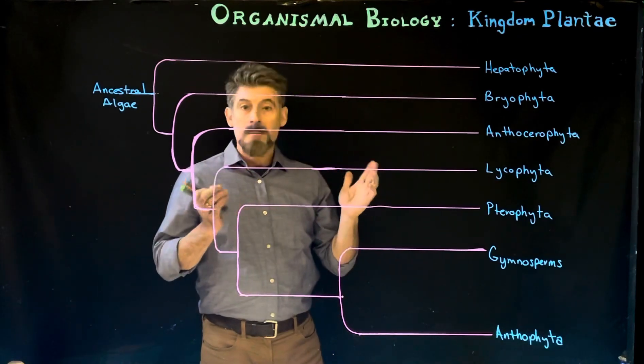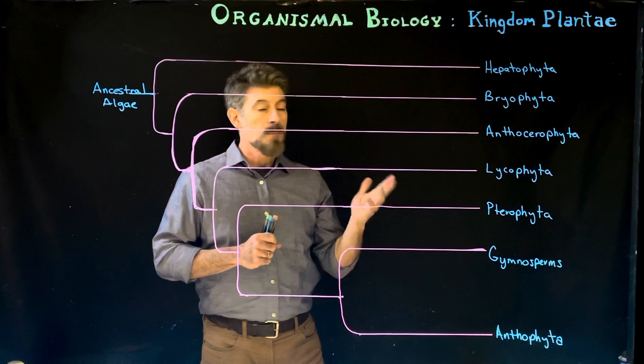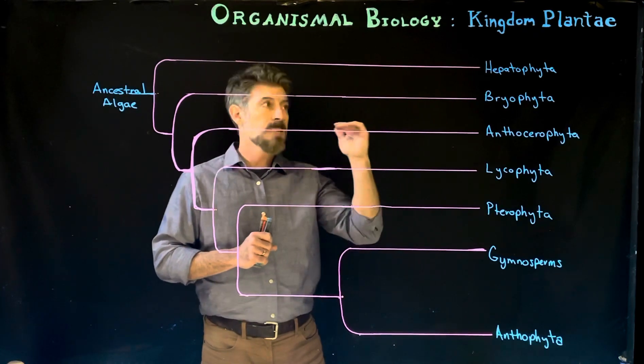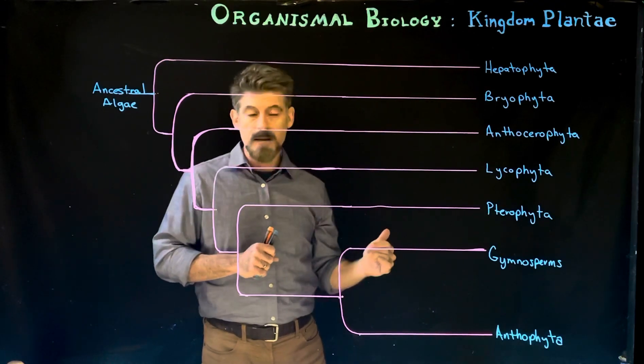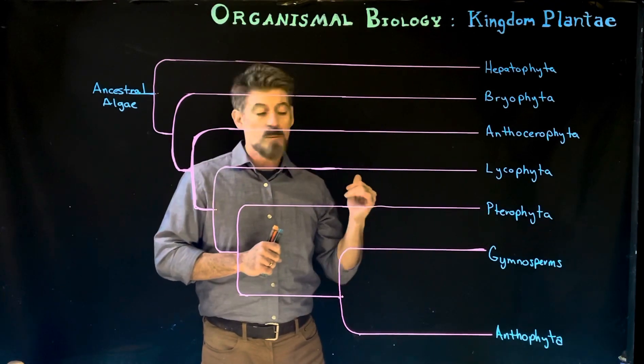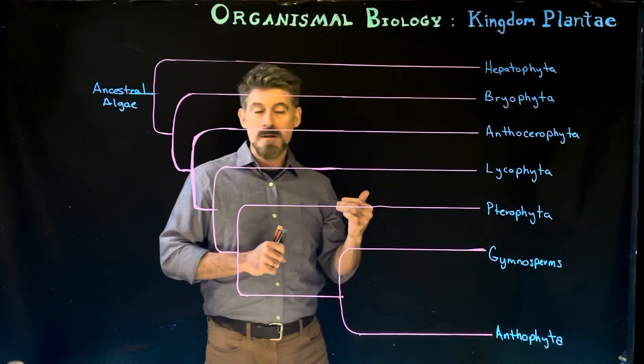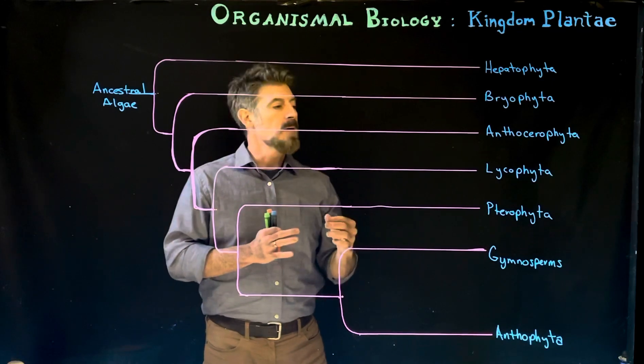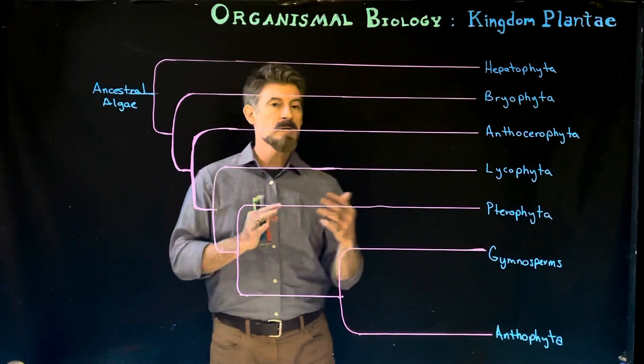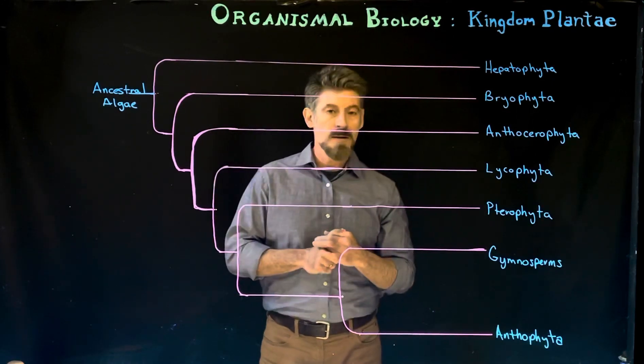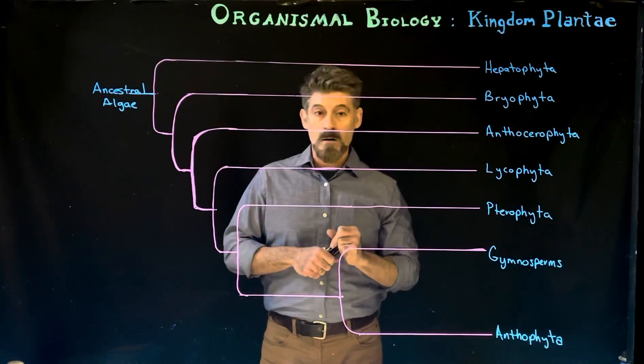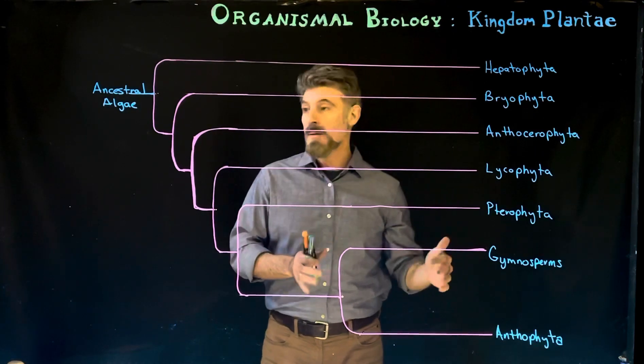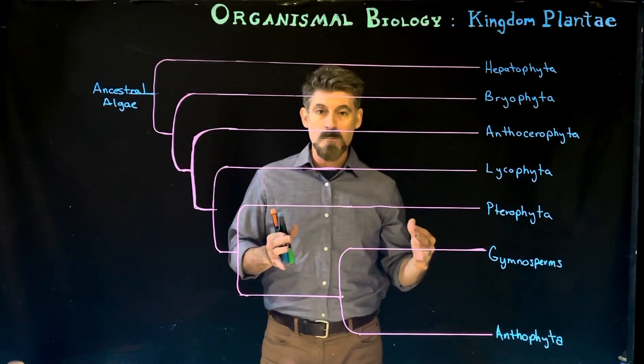As we start to talk about plants and get into the plant kingdom, what we're going to do is first talk about the way that the kingdom is divided into phyla. Sometimes we'll discuss them by the name of the phyla, sometimes by a different name based on another characteristic or something that's much more common about the group. We're not going to cover all the groups. We're going to cover a few of them in a little more detail and some of them in a lot more detail.